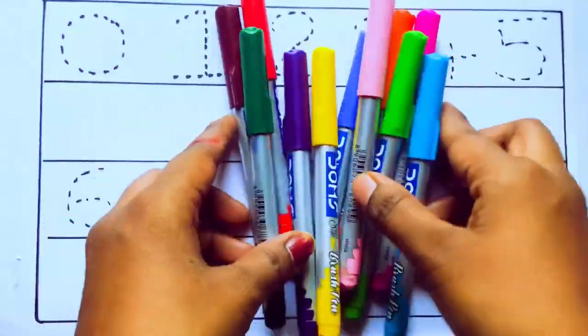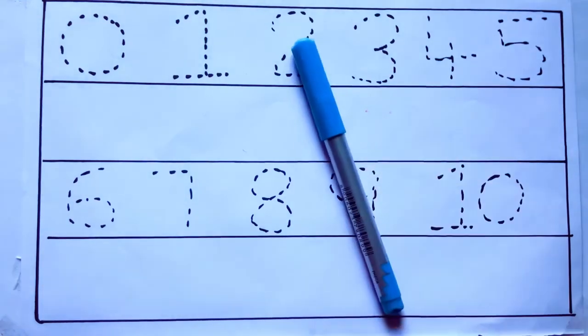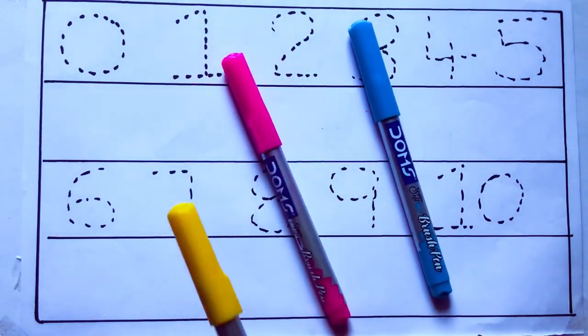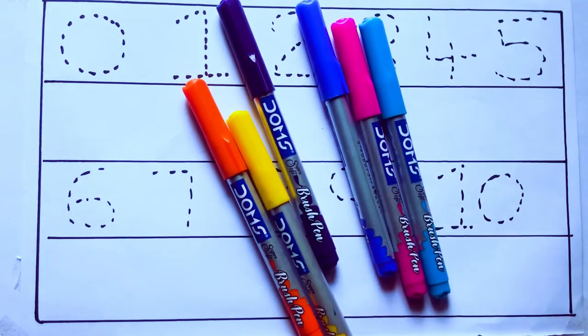Let's learn some colors. These are all the color pencils. Let's learn the names. Sky blue color, pink color, yellow color, orange color, violet color, blue color.